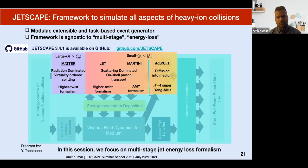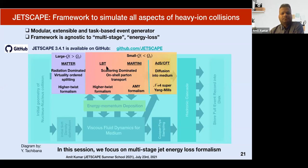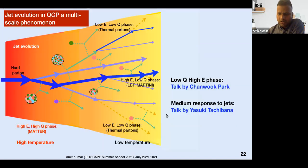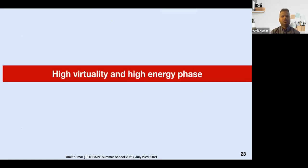In JetScape we have four energy loss modules incorporated. For high virtuality, we have MATTER, which is based on the higher-twist formalism and is used in the region where radiation is the dominant mechanism of energy loss. For low virtuality, we have LBT, Martini, and ADS/CFT. We have two more talks: one on low-virtuality and high-energy phase by Chanwook Park, and one on medium response to jets by Yasuki Tachibana. In this talk, I'll focus mainly on the high-virtuality, high-energy phase of the parton shower.